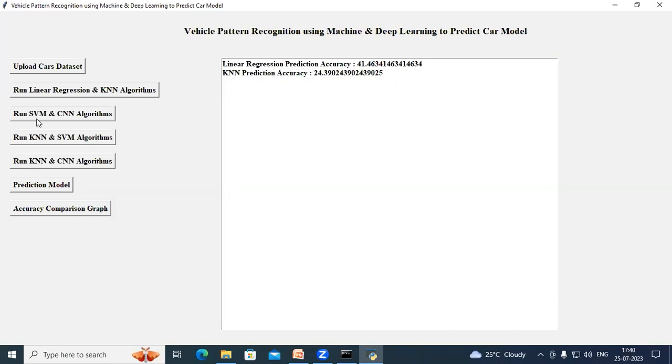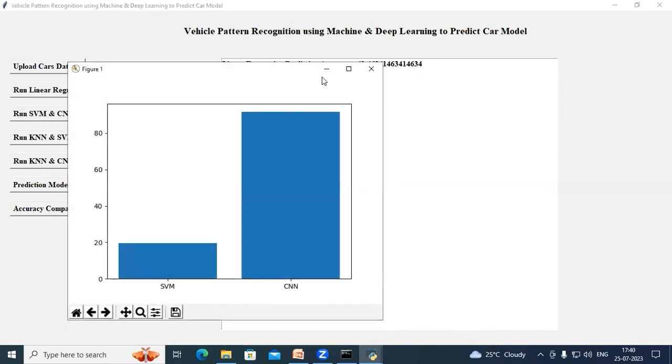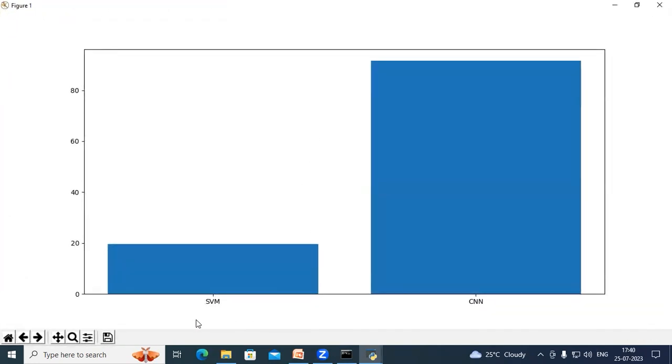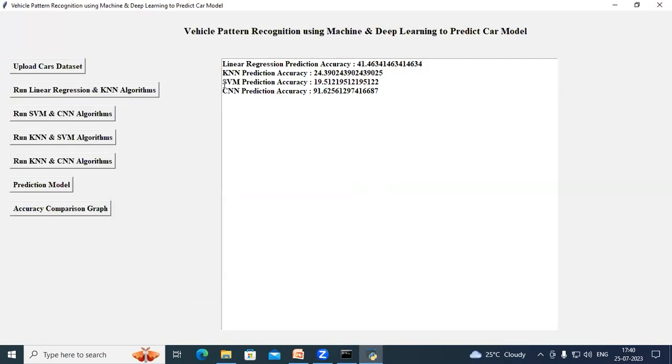Now click on run SVM and CNN algorithms button. So in this graph, we are comparing SVM model and CNN model. Close this graph and here we can see the accuracy of both the models.